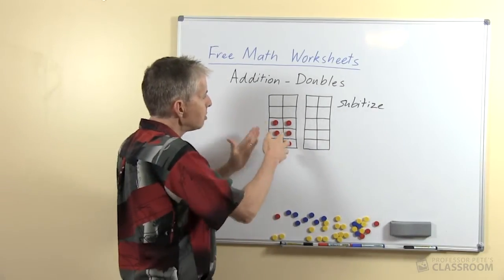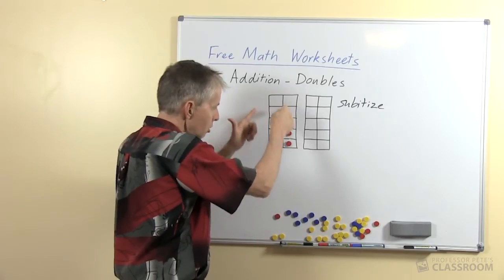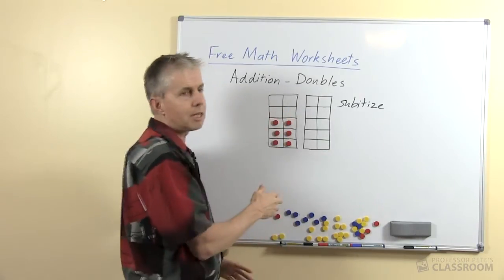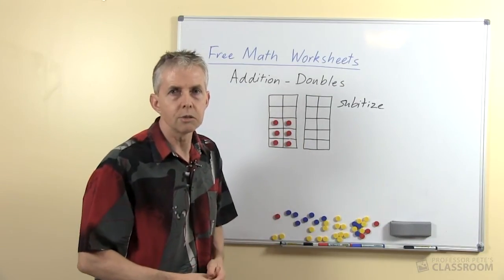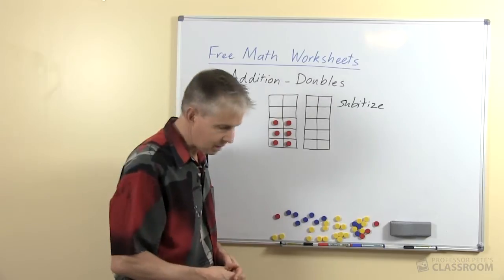And so they should be able to see that double 3, 2 rows of 3 fill up that much of the 10 frame, there are 4 left and so they will associate double 3 with 6 using the 10 frame.